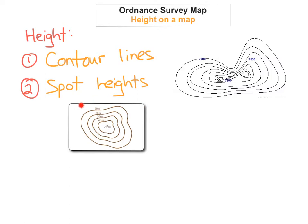The second method is spot heights. As you can see right in the center here, among the contour lines at 10, 20, 30, 40, there's a little spot marked, and it says 47 m. That means it's a spot height, and that point is 47 meters above sea level.